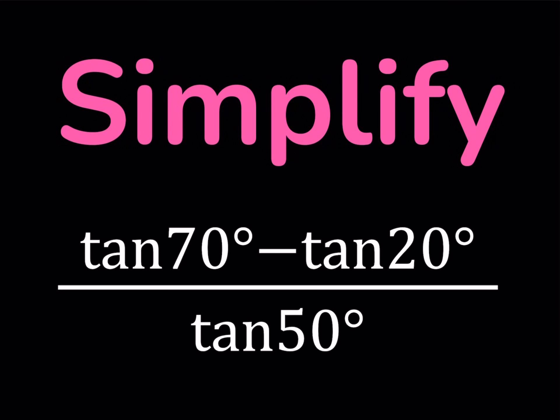Hello everyone, in this video we're going to be simplifying a trigonometric expression. We have tangent 70 degrees minus tangent 20 degrees, and that is divided by tangent 50 degrees. We're going to simplify this expression, so let's take a look.